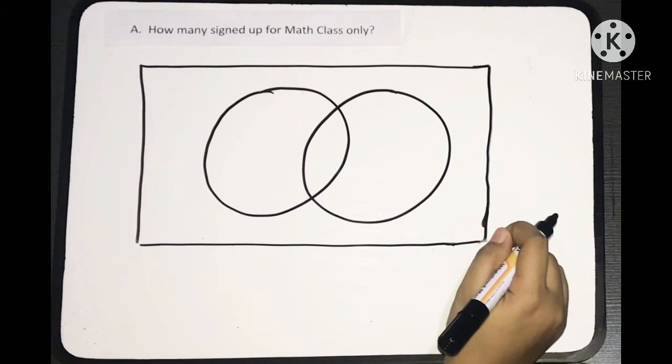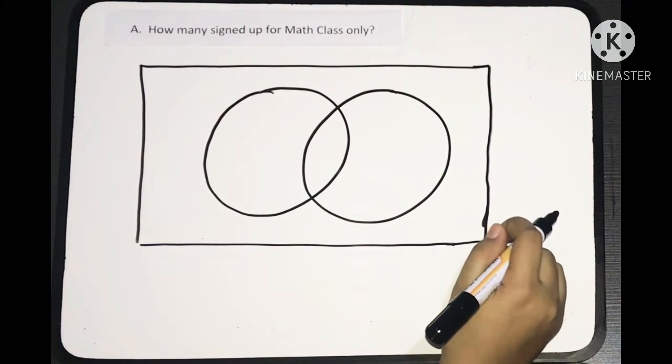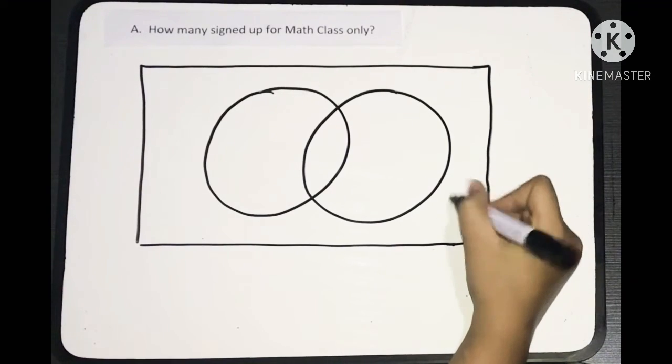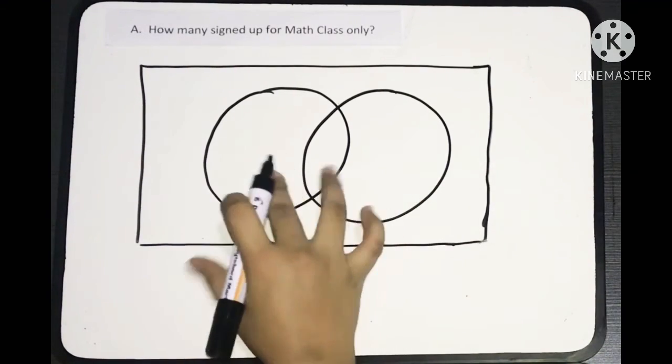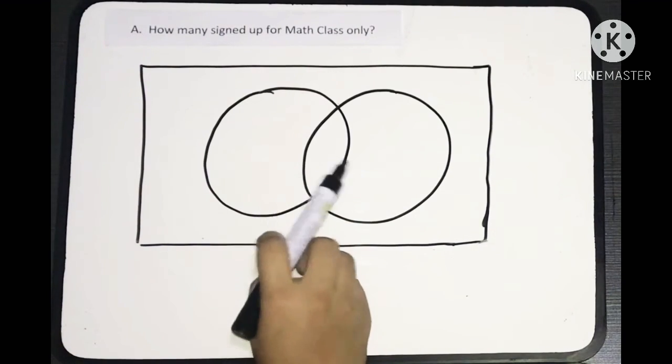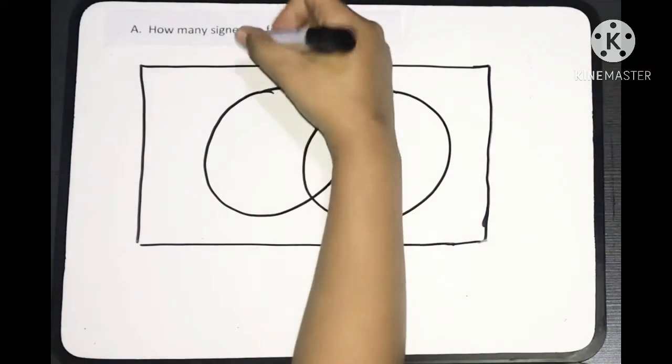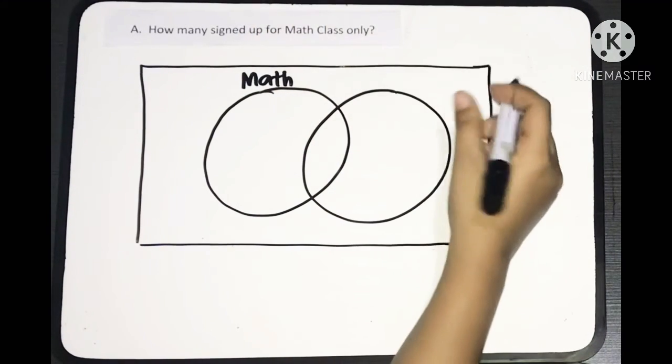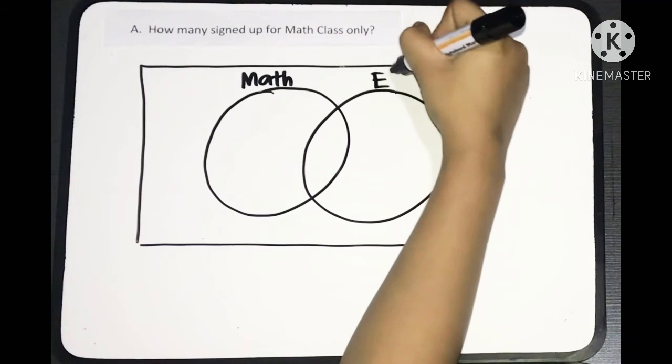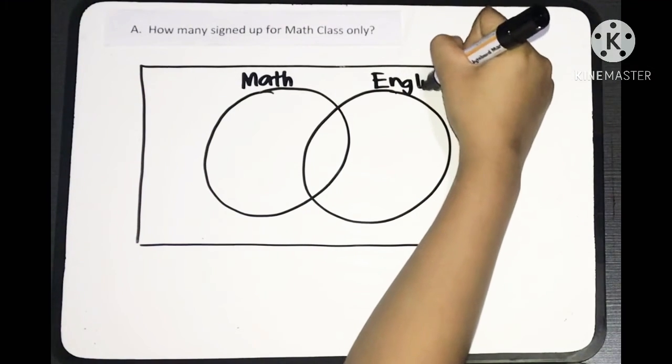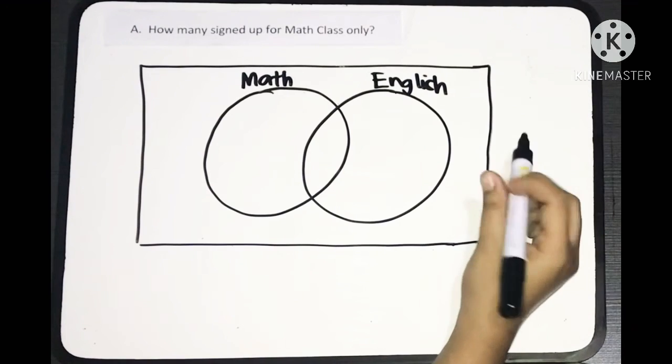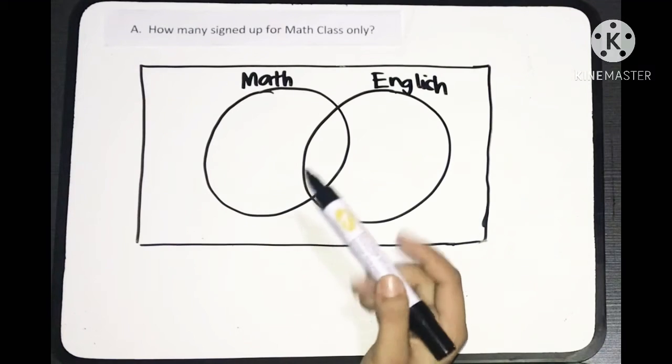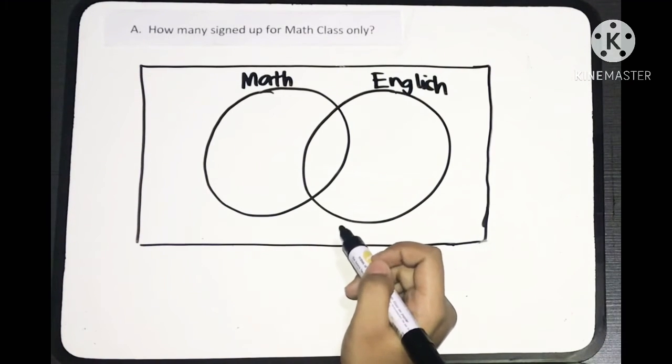Now, we can diagrammatically represent the problem as this one. The rectangle represents the universal set. And since we have two classes, that's why we also have two circles here. This circle is for math class, and the other circle is for the English class. As you can see, the two circles overlap, wherein we can write their intersection, which is, according to the given, 50.